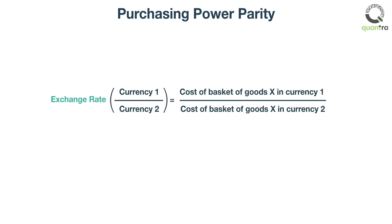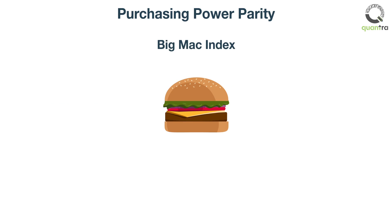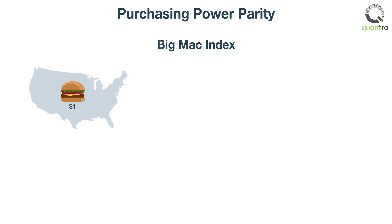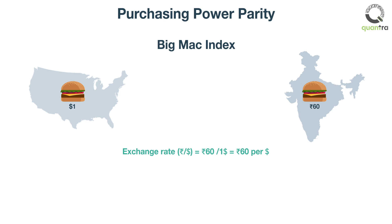Now let's understand purchasing power parity. It states that the exchange rate between two countries is equal to the ratio of the currencies' respective purchasing power. The simplest way to calculate PPP between two countries is to compare the price of a basket of goods which is identical across countries. We will understand this with the help of the Big Mac Index. The Big Mac Index uses the price of a Big Mac hamburger as the benchmark, replacing the basket of goods. If the price of a Big Mac is $1 in the USA and 60 Indian Rupees in India, the exchange rate is found by dividing the price in India by the price in the USA, giving us the exchange rate of the Indian Rupee to US Dollar — meaning 1 USD equals 60 Indian Rupees.